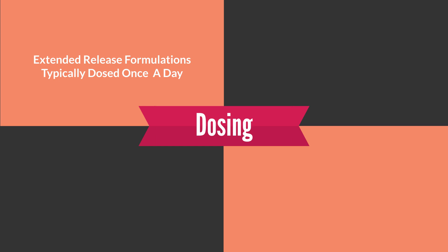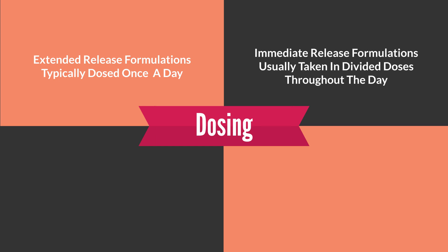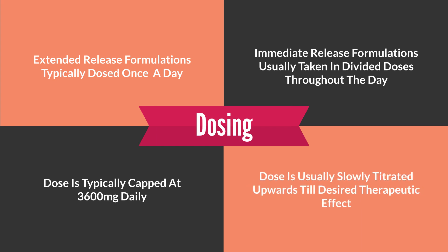With respect to dosing, the extended release formulations like Gralise may be given once a day, while immediate release preparations are usually divided throughout the day, typically two or three times a day. The dose is usually capped around 3,600 mg, because beyond that adverse reactions increase with no proven additional benefit. It is also not uncommon for the dose to be titrated gradually upwards — for example, starting at 100 mg at night and increasing as tolerated until a therapeutic dose is reached.